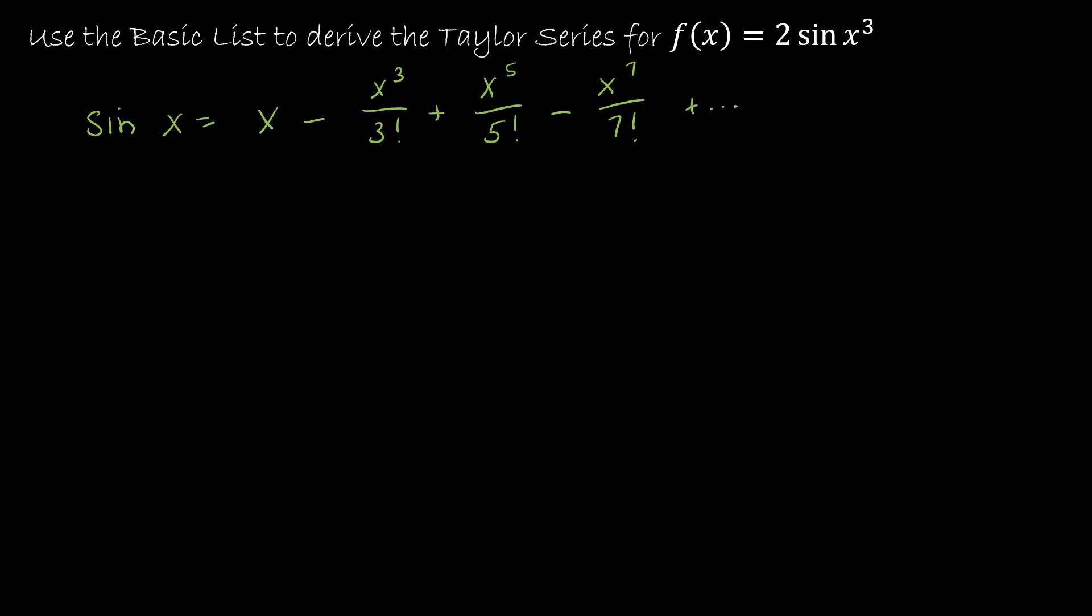Changing it, I'm going to have 2 sine of x cubed, which means I'm going to have 2 on the outside. And then x cubed means every time I see an x, I replace it with x cubed. So this is x cubed, and then x cubed to the 3rd would be x to the 9th over 3 factorial, and x cubed to the 5th would be x to the 15th over 5 factorial, and x cubed to the 7th would be x to the 21st over 7 factorial, and so on.